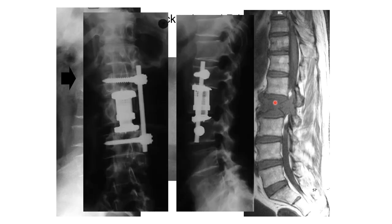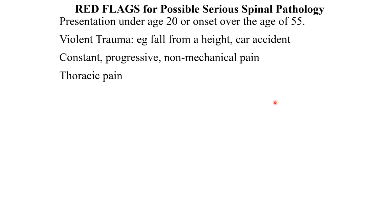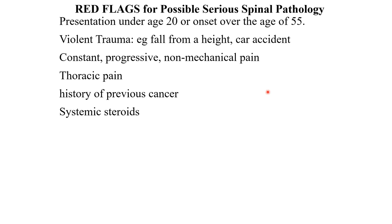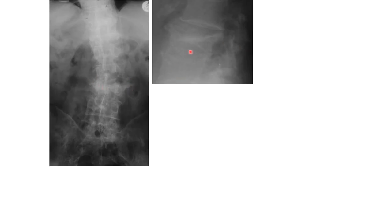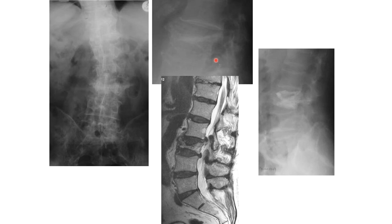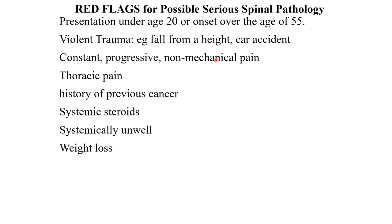We would go on to resect that and reconstruct it. Patients with thoracic pain need early investigation. Here's a patient with multiple levels of metastatic breast carcinoma. Patients with recent systemic steroids develop osteoporosis — you can see this patient has got osteoporotic collapse of the vertebra, confirmed on MRI scan, and we can repair this with a cement injection into that vertebra.